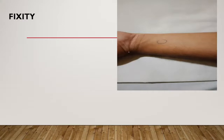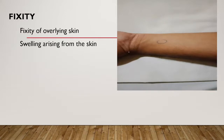Fixity is of two types. One is the swelling fixed to the overlying skin, and another is the tumor fixed to the underlying structures. If you find any swelling is fixed to the overlying skin, that means the swelling is arising from the skin — from the epidermis or dermis. Any swelling arising from those layers will be fixed to the skin, like a sebaceous cyst or other epidermal tumors.